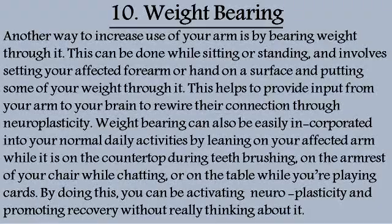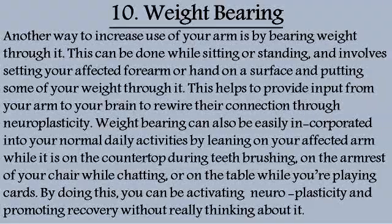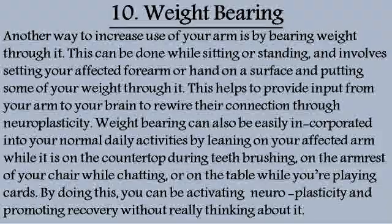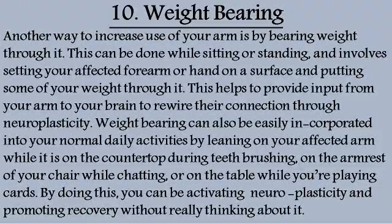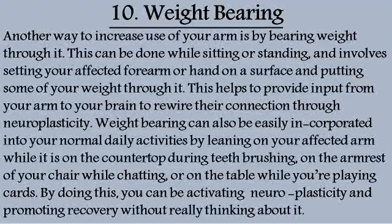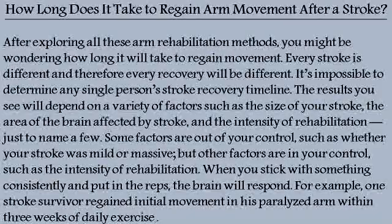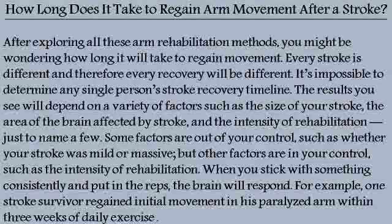Method 10: Weight Bearing. Another way to increase use of your arm is by bearing weight through it. This can be done while sitting or standing, and involves setting your affected forearm or hand on a surface and putting some of your weight through it. This helps to provide input from your arm to your brain to rewire their connection through neuroplasticity. Weight bearing can also be easily incorporated into normal daily activities — leaning on your affected arm on the countertop during teeth brushing, on the armrest of your chair while chatting, or on the table while playing cards — activating neuroplasticity without really thinking about it.